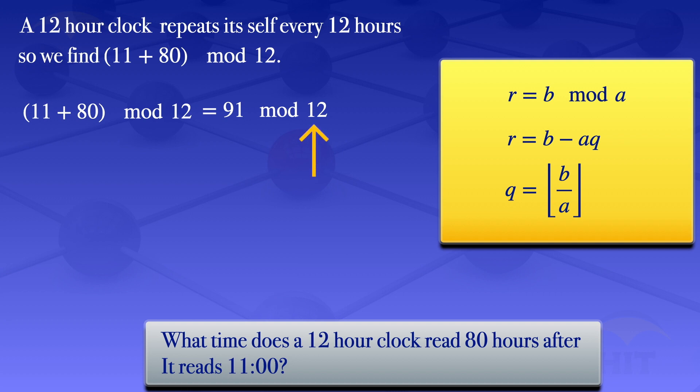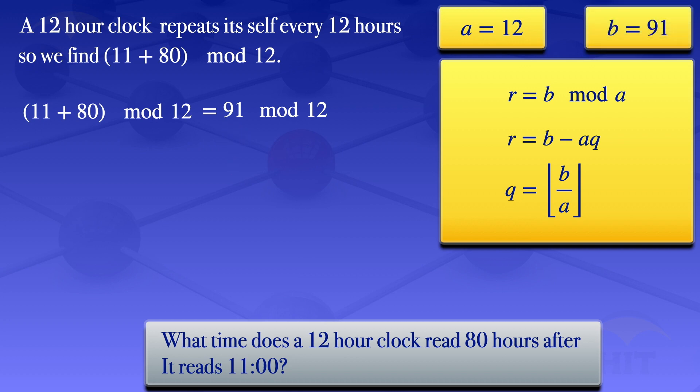In this case, the 12 is our divisor, so a equals 12. The 91 is our dividend, so b equals 91. Using this a and b, we can find the quotient using the formula.